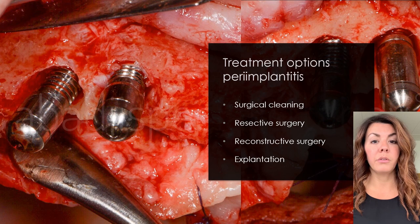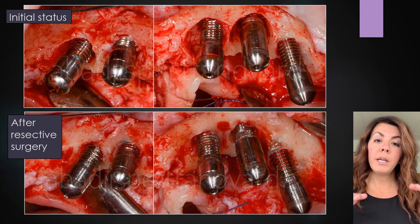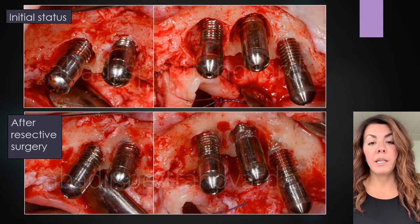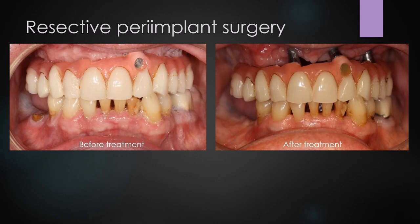The second option is doing a resective therapy. With this, I mean that you try to make the crater defect more horizontal around the implant, and in such a way try to treat the peri-implantitis. The disadvantages with this type of treatment is that you will get a gingival recession that will affect the aesthetic appearance, and it might affect the patient's speech.